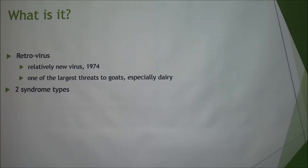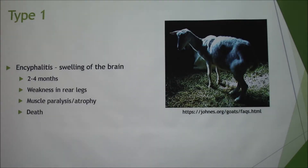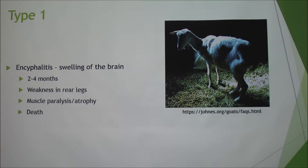Like the name suggests, there are two syndrome types. The first type is encephalitis, which is swelling of the brain. This happens in animals two to four months old but can occur in older animals as well. It causes weakness in the rear legs and muscle paralysis, and eventually death if not taken care of.